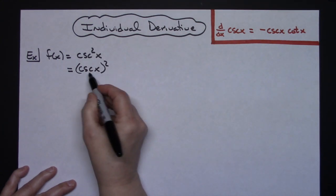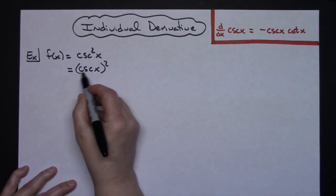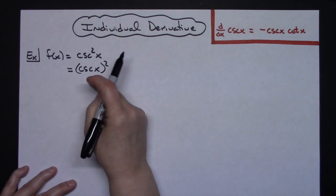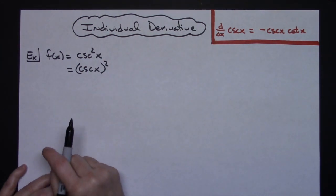Just moving that out so I can clearly see my inside function is cosecant x. My outside function is something being squared.